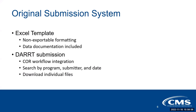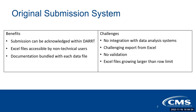The DART submission system has been around for a couple of years and is well integrated with the core workflow — you can mark submissions as received and it notifies the cores. It allows searching by program, submitter, and date, and downloading individual submitted files. The cores can acknowledge submissions within DART, which is critical from a contractual and program management perspective. Those Excel files were accessible to non-technical users, and the documentation was bundled with each data file in a separate tab.